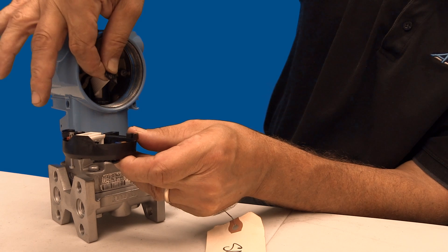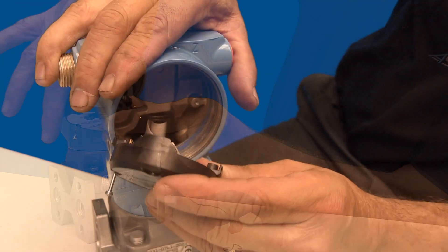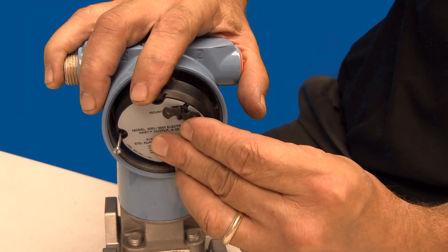To unclip it, you just have to depress the latch and pull it out. Once the ribbon is clipped in, simply line the pins up with the holes and push in.